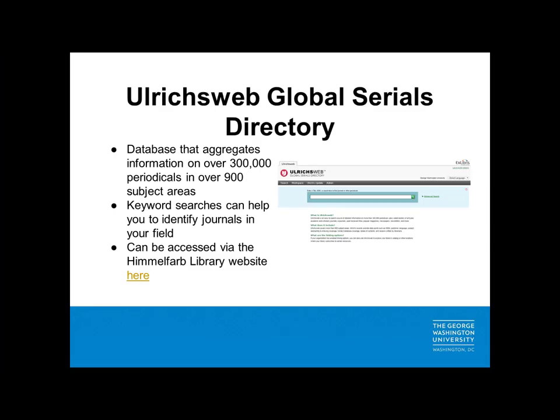The last aggregation-based resource I want to discuss today is the Ulrich Web Global Serials Directory. This is a subscription-based database that aggregates information on over 300,000 periodicals and over 900 subject areas. Keyword searches can help you identify journals in your field. This resource does not currently provide journal usage metrics, but it does allow you to determine whether a journal is peer-reviewed or open access. Like Journal Citation Reports, this must be accessed via the Himmelfarb Library's website under the list of electronic databases.